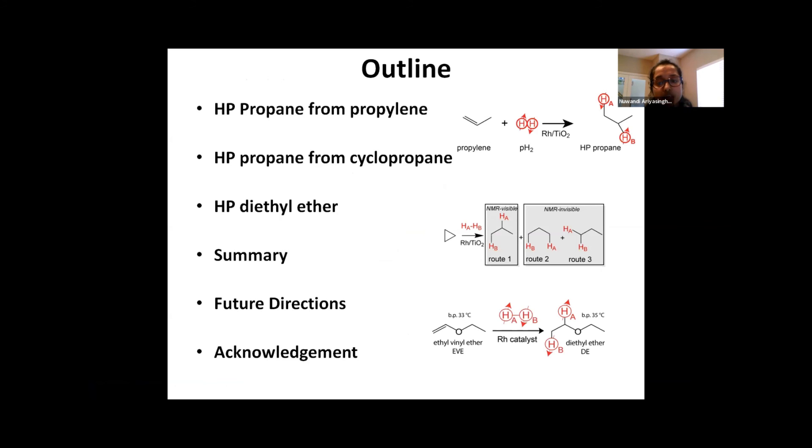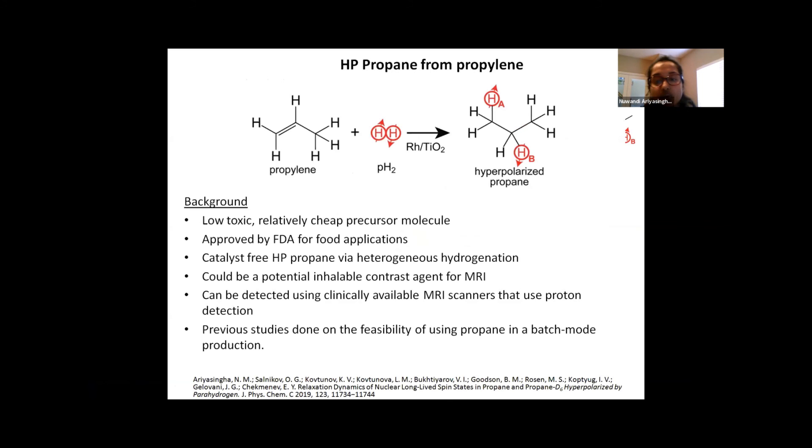So all these compounds have been studied using PHIP technique. Hyperpolarized propane was produced from propylene via parahydrogen addition in the presence of rhodium-titanium acid catalyst. The motivation for this work was, as it was explained in a couple of previous talks this morning, that this is a good way of producing hyperpolarized propane in a pure state which is catalyst-free. So we believe that this can be used as a potential inhalable contrast agent for magnetic resonance imaging.